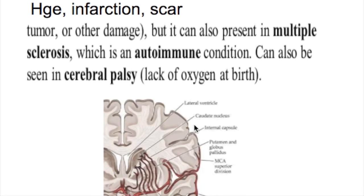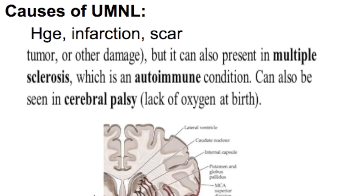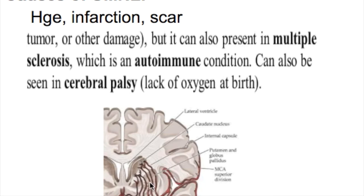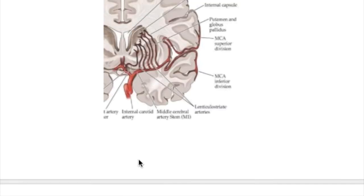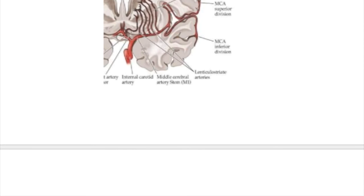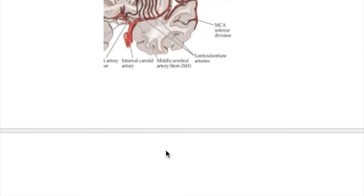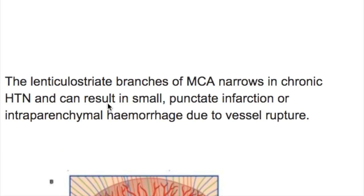The internal capsule is the most common site of hemorrhage and infarction — about 60% of hemorrhage in the brain occurs in the internal capsule. The blood supply is through the lenticulostriate branches of the middle cerebral artery. Rupture of these arteries causes an upper motor neuron type of lesion, or infarction due to thickening of the blood vessels.